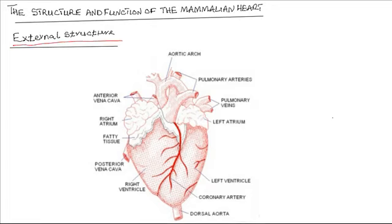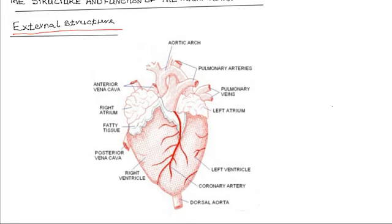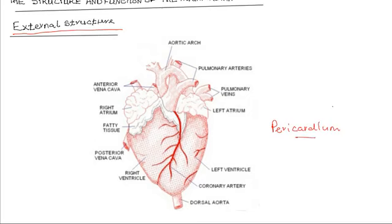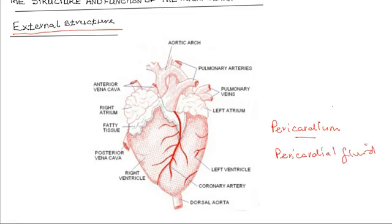In this diagram, you can see the external features of the mammalian heart. The heart is enclosed in a translucent membrane known as the pericardium. This pericardial membrane encloses the heart and secretes the pericardial fluid, which acts as a lubricant when the heart is working.